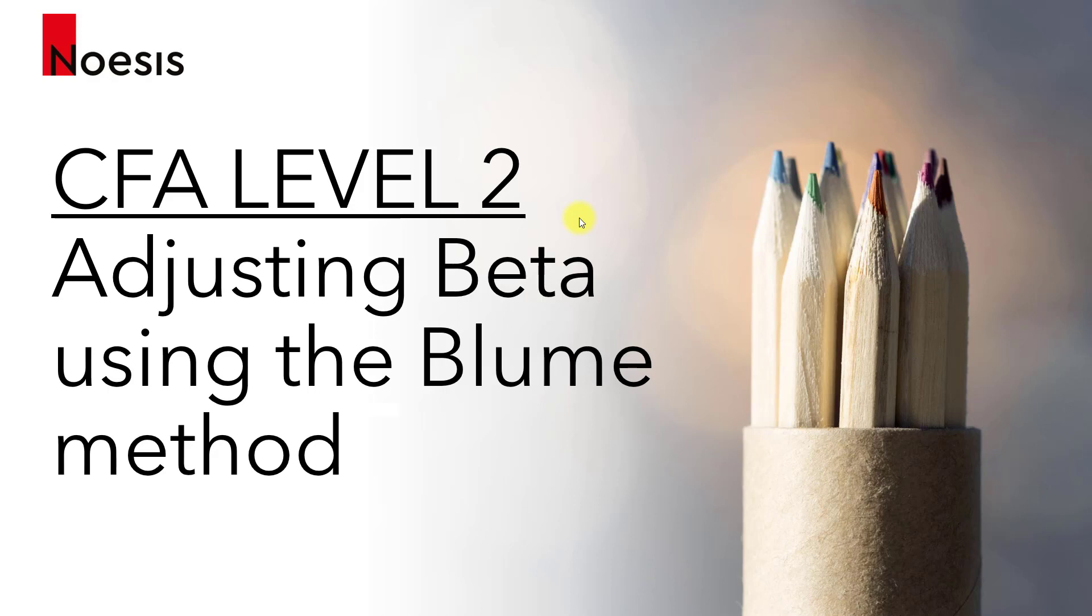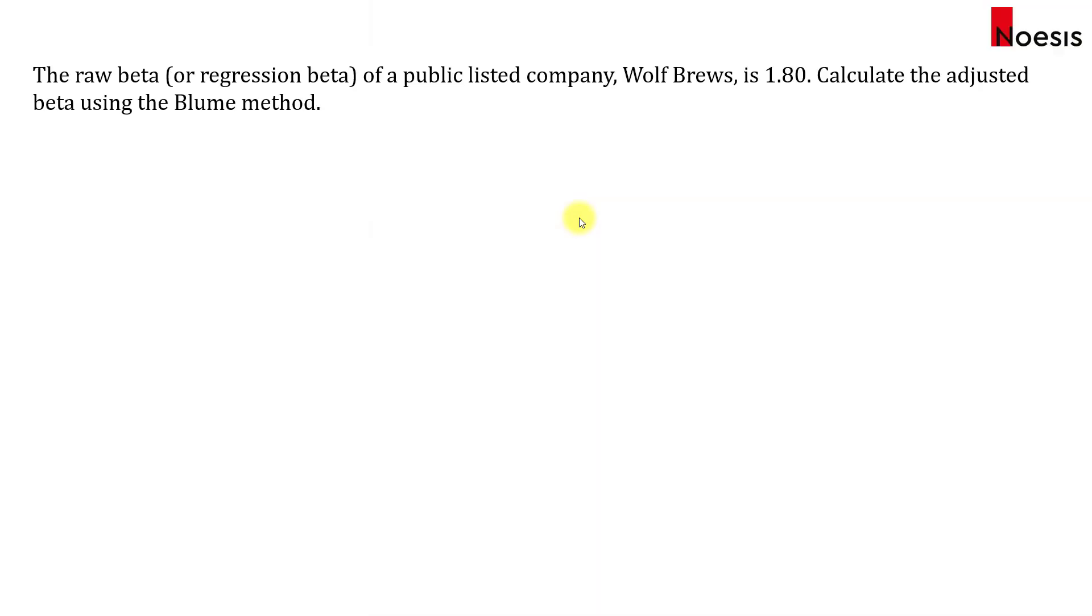The method here is applied on the regression beta, or what we call the raw beta of a company. Usually it will be a public listed company, and the regression beta will be done on the company's historical data. So when we get the regression beta, this is based on historical data.